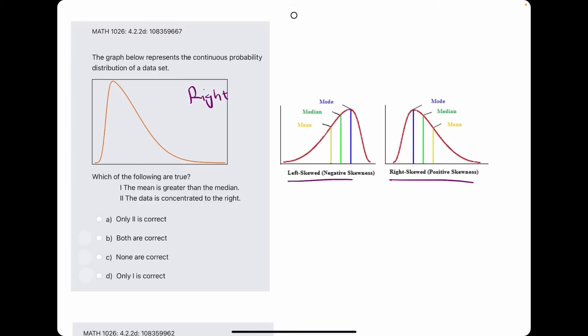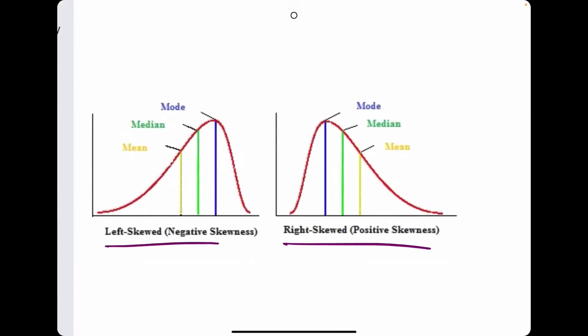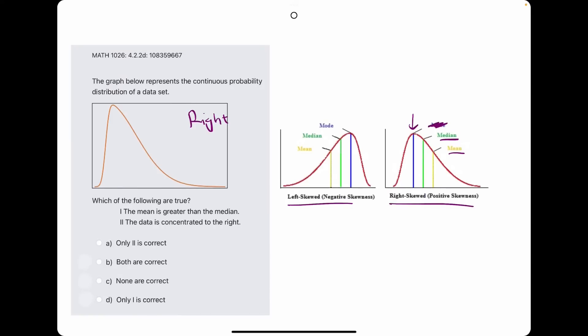And so what do we want to know? What do we need to know about these? We can sort of ignore the mode once again. The big thing is that for a right skewed graph, the mean is still somewhat towards the middle, while the median sort of follows where the maximum is, where the bump in the graph is. So the median is closer to the bump.